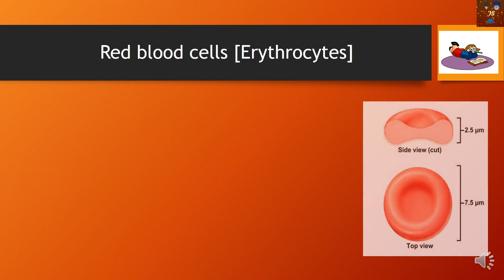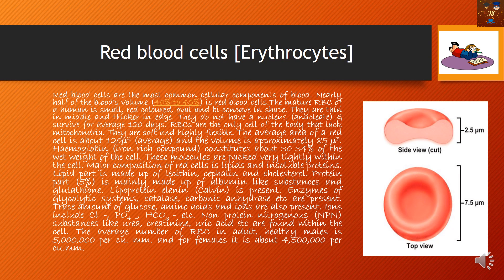Red blood cells, or erythrocytes, are shown here with both a side view and top view. They are 7.5 micrometers in diameter and constitute almost half of the total blood cells. Red blood cells are very important because hemoglobin — present within them — carries oxygen throughout the body and also carries carbon dioxide from different parts of the body for excretion.